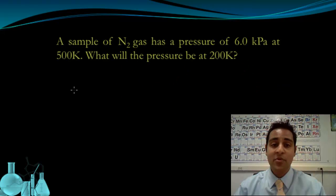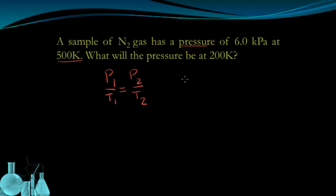Here we have an example that uses Gay-Lussac's law. We have pressure and temperature as our two components of this problem, so we can use P1 over T1 equals P2 over T2.